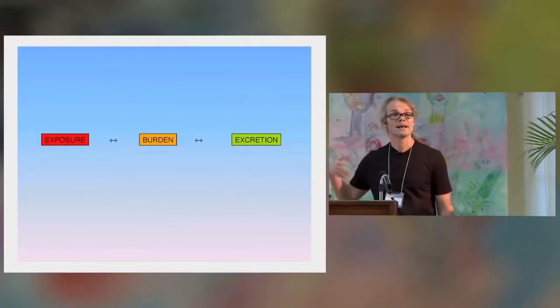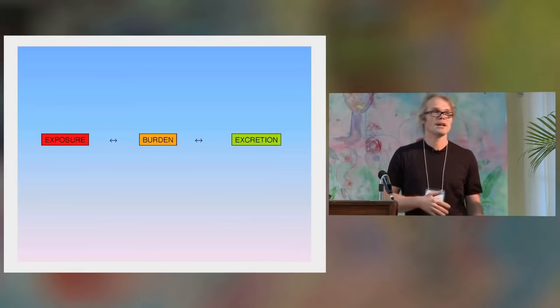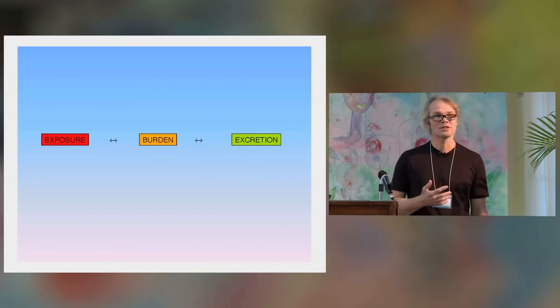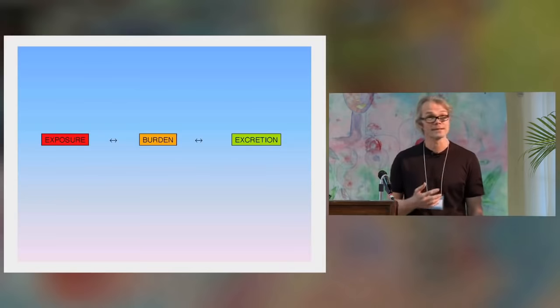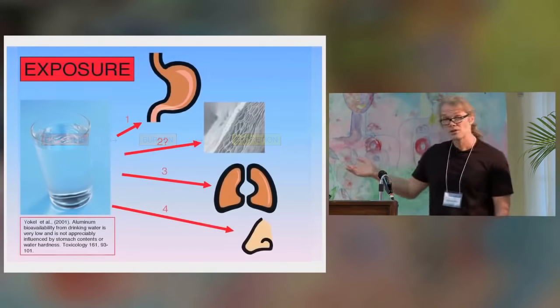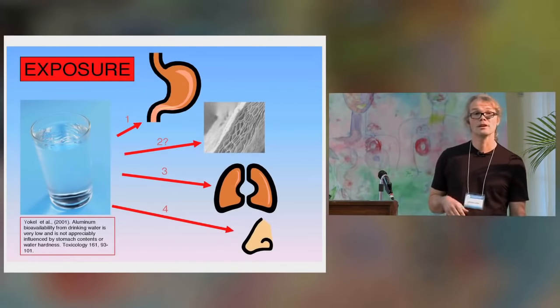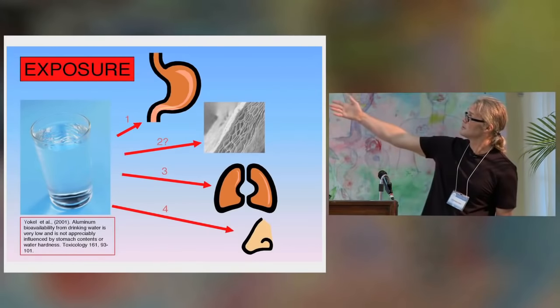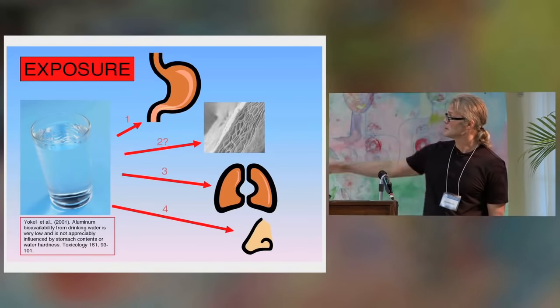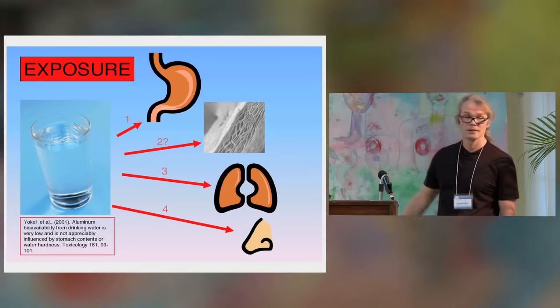So this is what we have to do, we have to have this balance between our exposure, the burden and our excretion of aluminium to understand how much aluminium there is in us and where it is. The obvious one perhaps is in what we drink. So we are exposed both through the stomach, certainly through inhalation across the lungs and the nose.